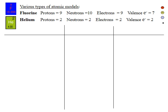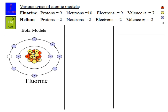Now that we've practiced with fluorine and helium, let's talk about different versions of these atoms in terms of models. This is a Bohr model of fluorine — it shows everything: nine protons, ten neutrons, nine electrons. In the outermost shell — the second shell — we have seven valence electrons, even though we have nine electrons overall.